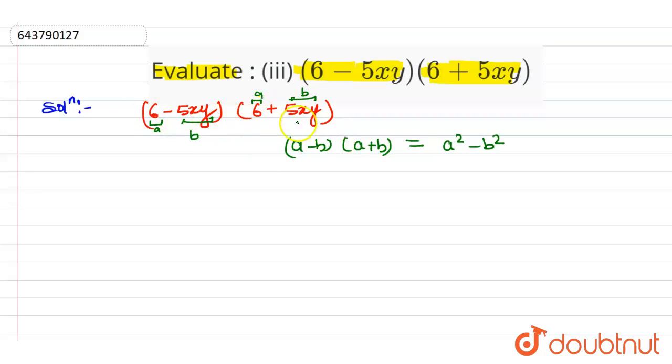So we can write from here that according to question a is equal to 6 and b is equal to 5xy.